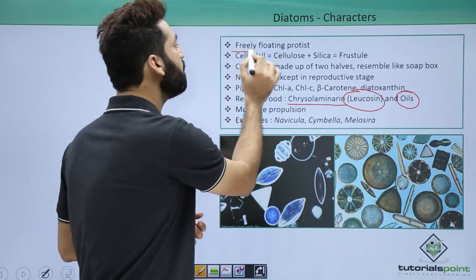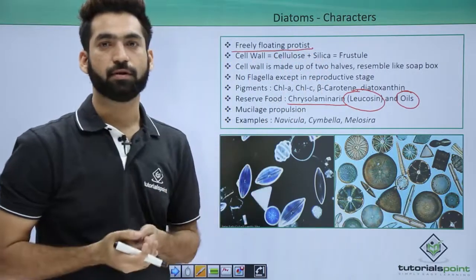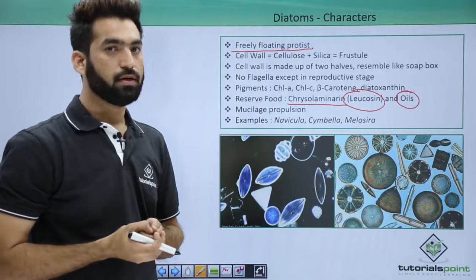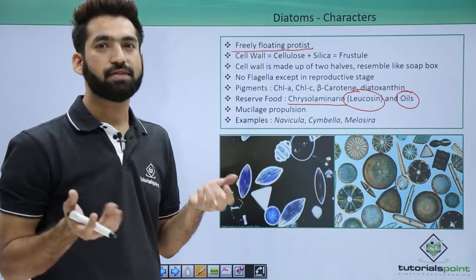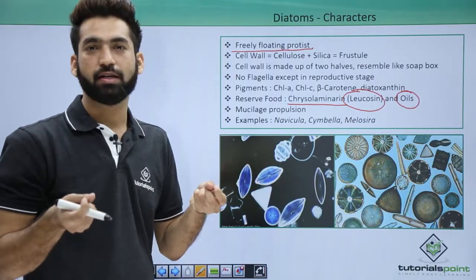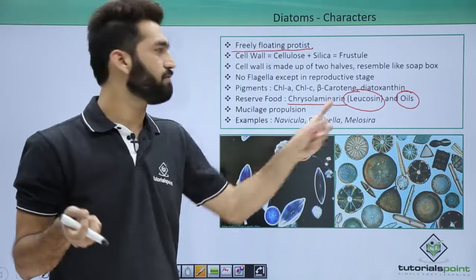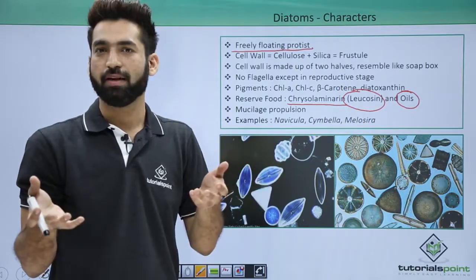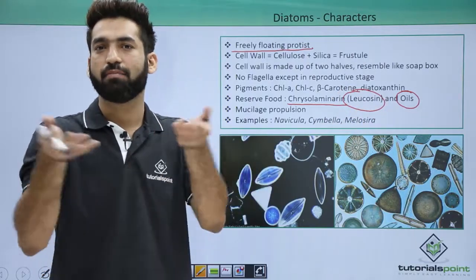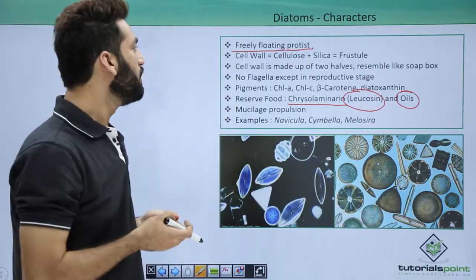Diatoms remain freely floating over the surface of water. This is because they have some lipid structures, some oil structures in the body, which make them afloat over the surface.